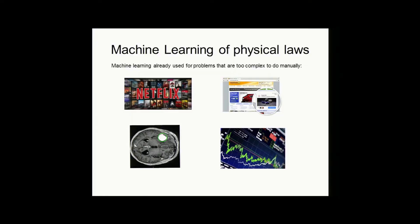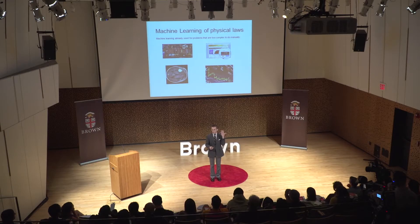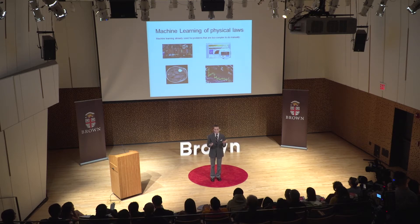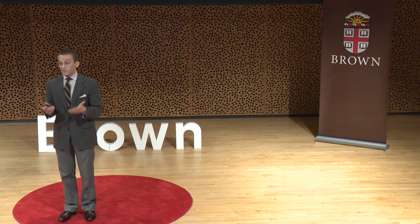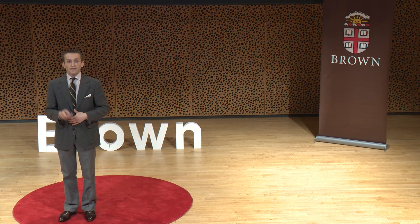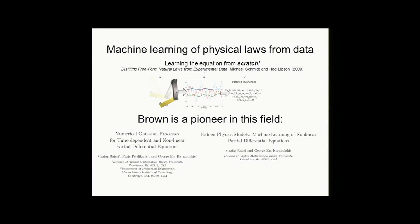This is where machine learning comes in, because machine learning is specifically developed to attack complex problems directly. It's already being used today for utilitarian purposes — for example, the movie recommendation system on Netflix or online ads, and also in much more critical applications like medical and financial data. But can it be used to discover physics, as I suggest? The answer is yes, and this is a very cutting-edge area at the intersection of math, computer science, and physics.